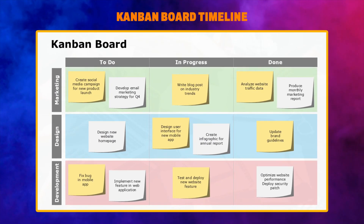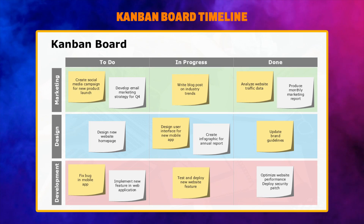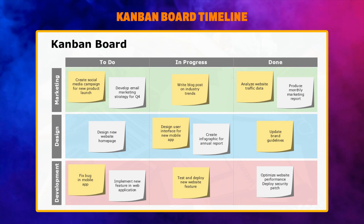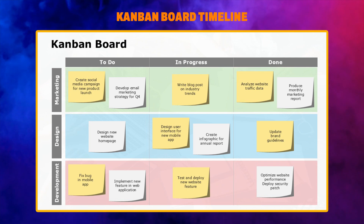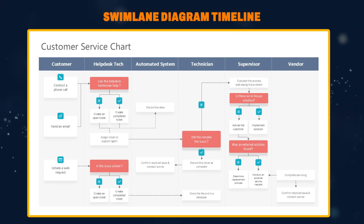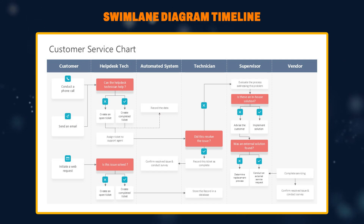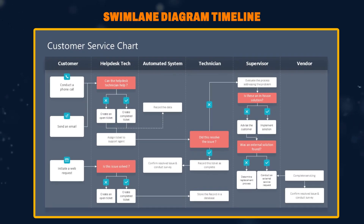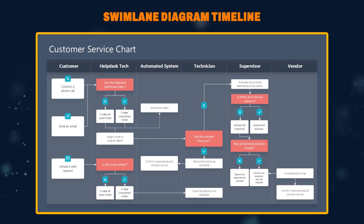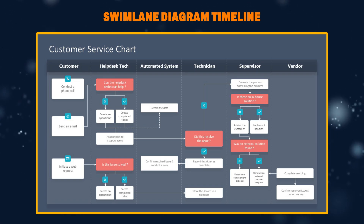For a visual workflow, consider a Kanban board — think sticky notes on a whiteboard but with digital flair. Each column represents a stage in the process, making progress easy to track. Last but not least, the swim lane diagram is great for visualizing processes involving different teams or departments. Imagine a swimming pool with each lane representing a specific team and their tasks.